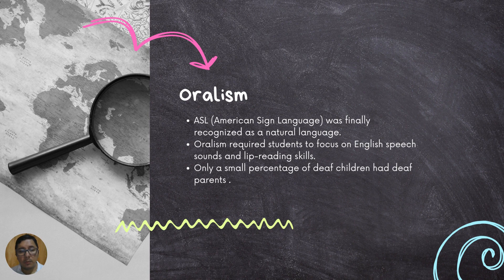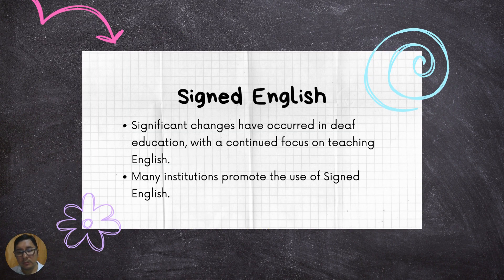During this time, ASL continued to thrive, with many deaf children of hearing parents learning it at schools for the deaf from their peers rather than their teachers. Only a small percentage of deaf children have deaf parents who taught them sign language directly. As a result, American Sign Language was primarily transmitted from child to child.